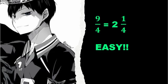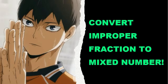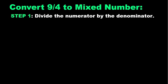Super easy! And we will also discuss how to convert improper fraction to mixed numbers. Now let's convert 9 over 4 to a mixed number. Step 1: Divide the numerator by the denominator.